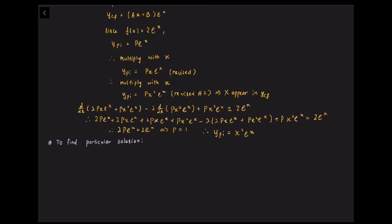The general solution is y_CF + y_PI. The y_CF is (ax + b)·eˣ and y_PI is x²·eˣ. So the overall equation is y = (ax + b)·eˣ + x²·eˣ.